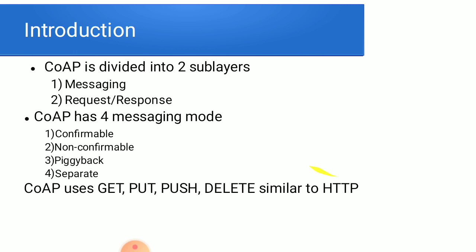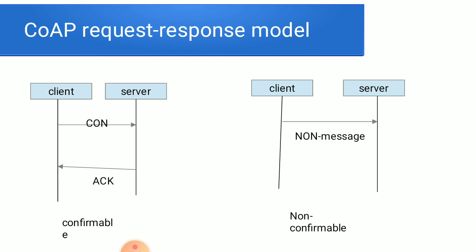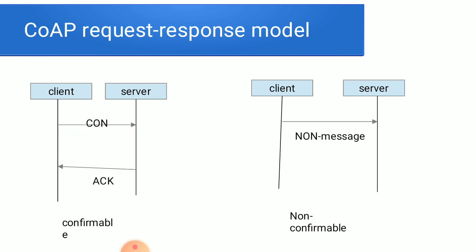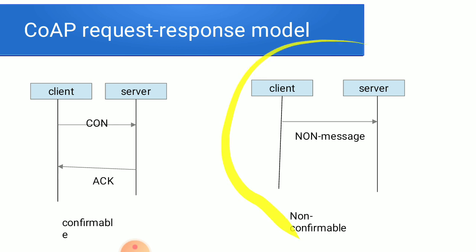The CoAP request-response model has four types: confirmable, non-confirmable, piggyback, and separate. In the picture representation of the confirmable type, the client sends a connection request to the server, and the server responds with an acknowledgement.